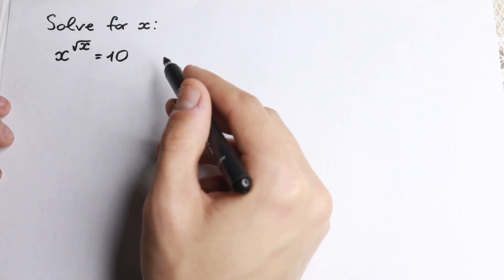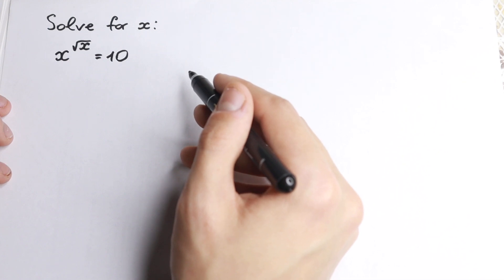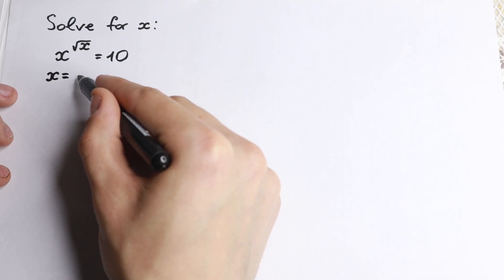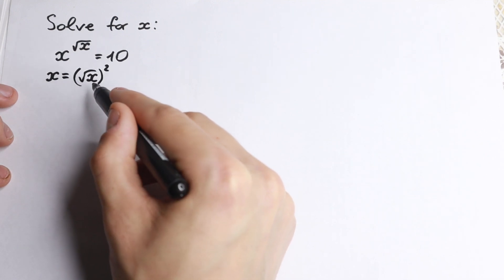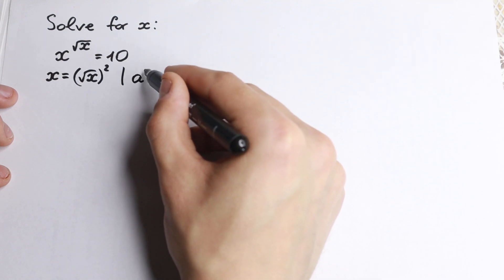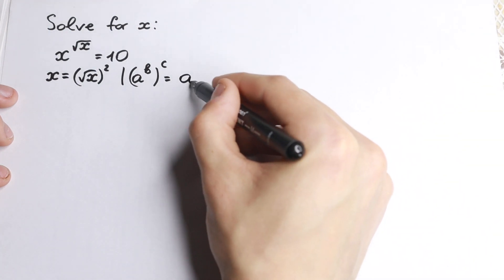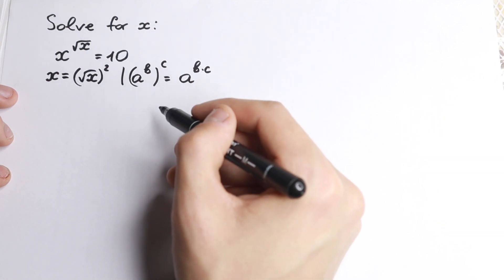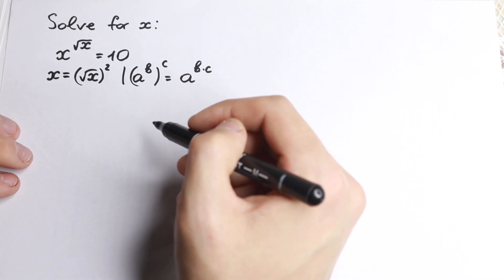So we need to find a really good trick to solve it. In this video I'm going to show you how to solve it quickly and without any problems. First, we need to know that x can be written as square root of x squared. This is the first really important step. Second, we need to know an important rule: if we have a to the power b, and we raise this to the power c, we can write it as a to the power b times c.